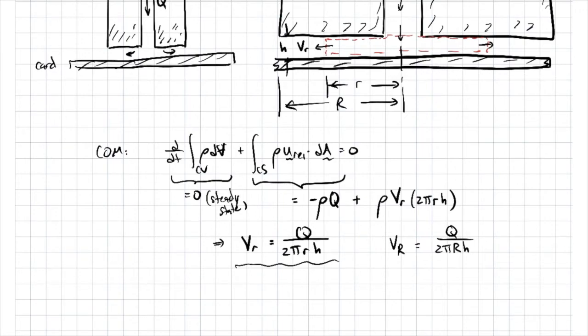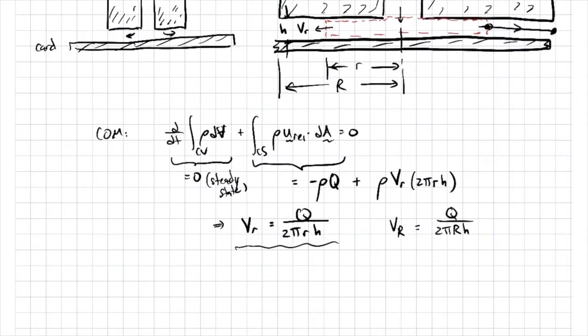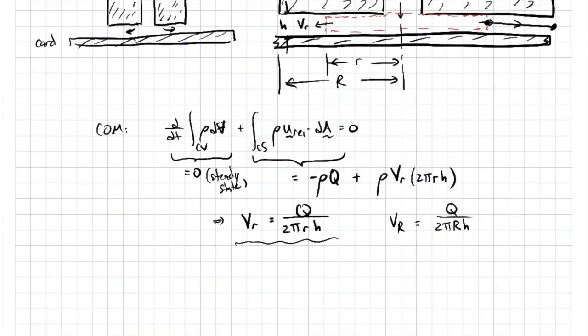Now let's go ahead and apply Bernoulli's equation from some streamline that goes from right at the edge, we're right over here and to this point here. So there's some streamline that goes that way, right? So we're going to go ahead and apply Bernoulli's equation between those points. So this will be point 1 over here and point 2 over there.